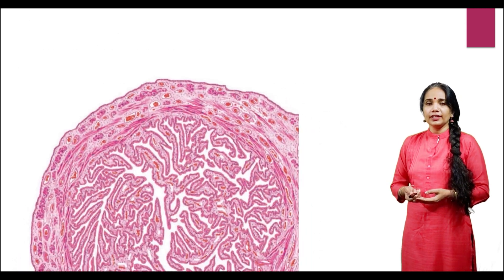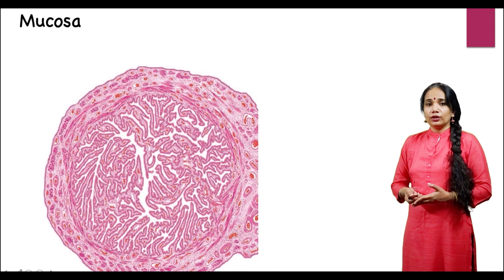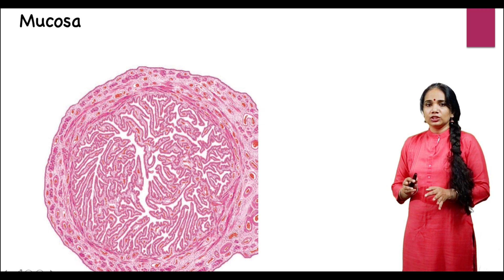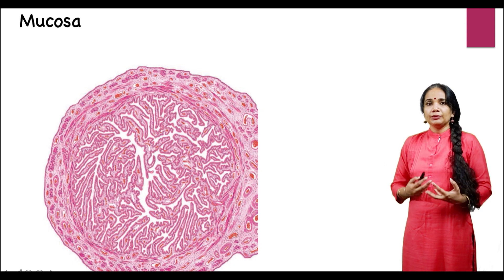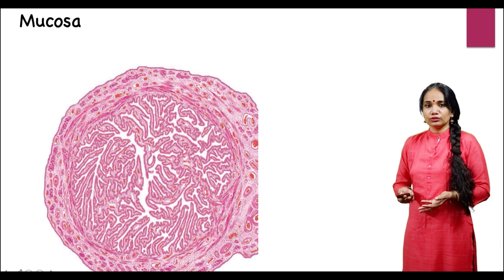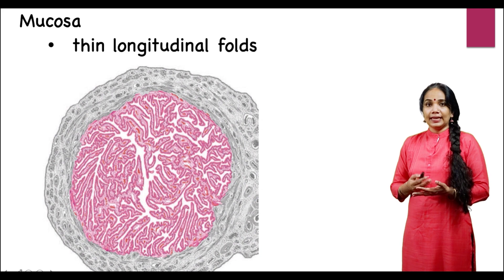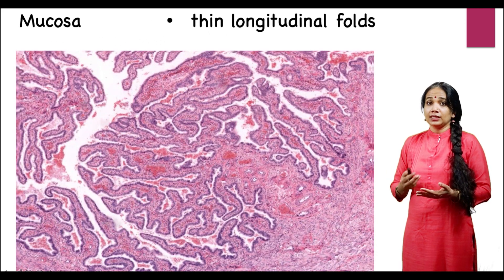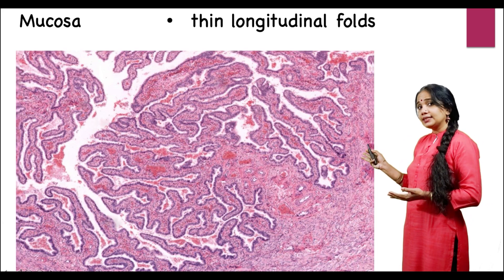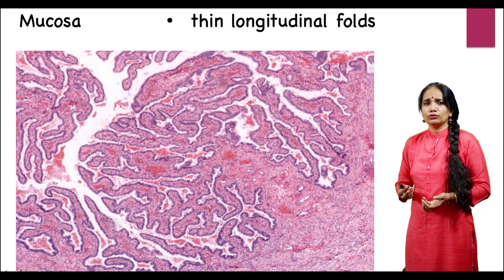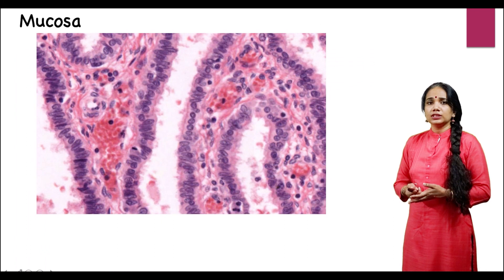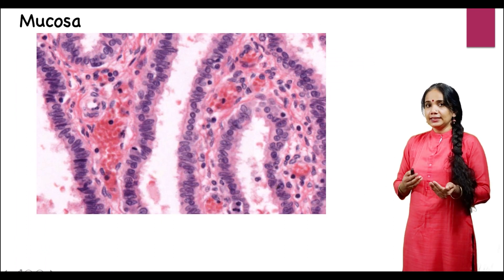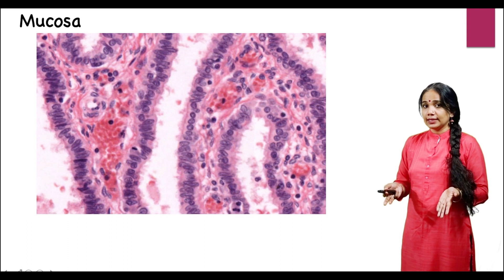The innermost layer is called the mucosa, and it has a really characteristic structure. Multiple folds — which may be primary, secondary, or tertiary folds of mucosal layers — can be seen. In higher power views, these foldings can be better appreciated, as you can see in that picture. All of these folds are lined by simple columnar epithelium.